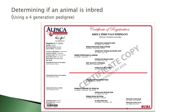Essentially, we draw a line between the parent's pedigree — that is, the sire's pedigree and the dam's pedigree. What we do is look to see if any animals show up both on the top side of the pedigree, the sire side, or the bottom side of the pedigree, the dam side. If an animal in that ancestry shows up on both sides, then Crea Peruvian Epiphany is inbred.